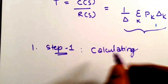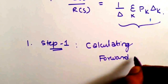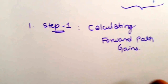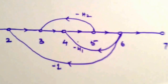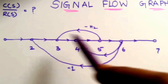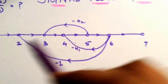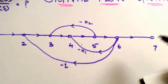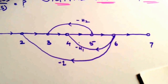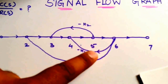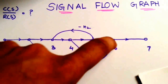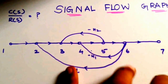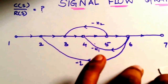Step one is calculating the forward path gains. The forward path goes from node 1 to node 7. In this question there is only one forward path. If there were forward arrows at other places, we could have had two forward paths, but in this question we only have one forward path.